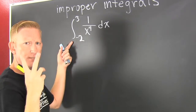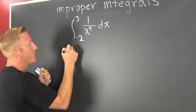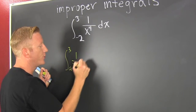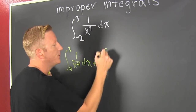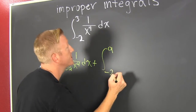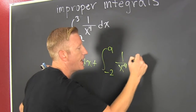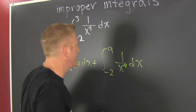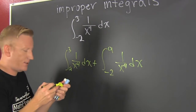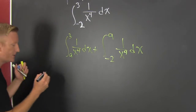We need to break it into two equivalent integrals: the integral from 3 down to a of 1 over x to the 4 dx, and then add that to the integral from a to minus 2 of 1 over x to the 4 dx. Next, we need to run the limit — it's two-sided.